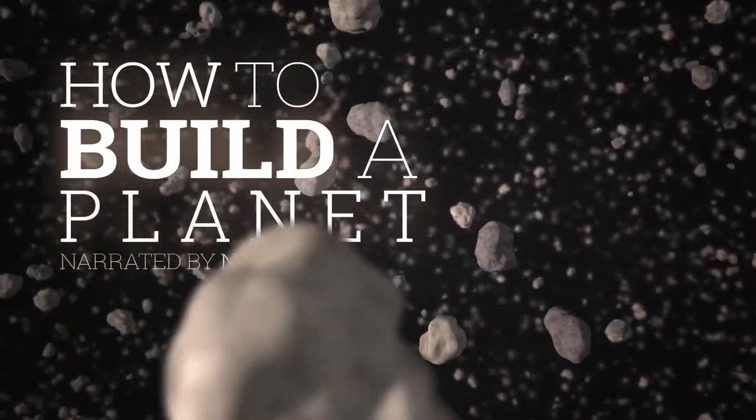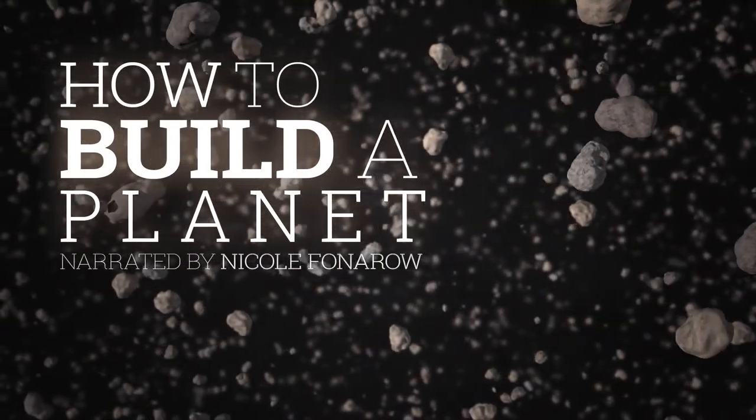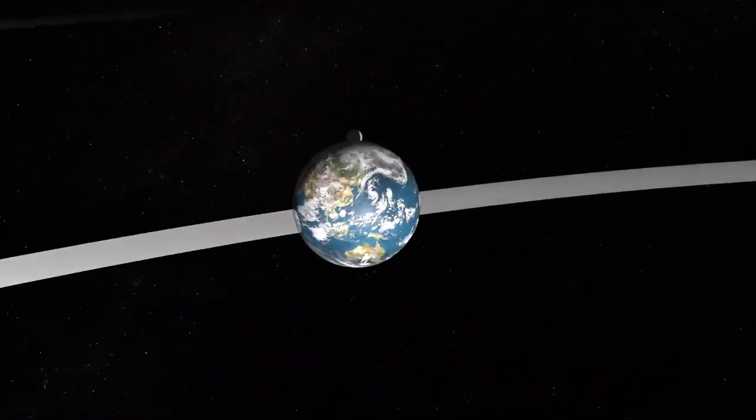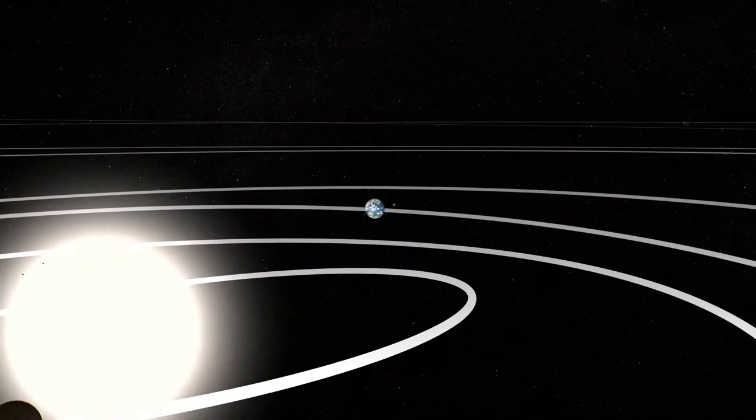How to Build a Planet. Here we are, on the small, water-covered, rocky planet, orbiting a medium-sized yellow star.